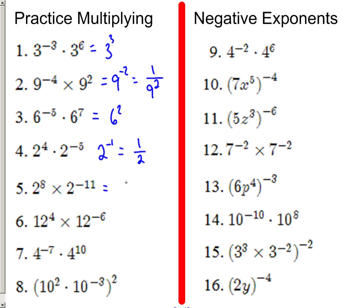We can make this one 2 to the negative third power. Make it positive, so 1 over 2 to the third. Here is 12 to the negative second power, so 1 over — if you wanted to go ahead and figure out what 12 to the second power is, it's 144. So this one would be 1 over 144.